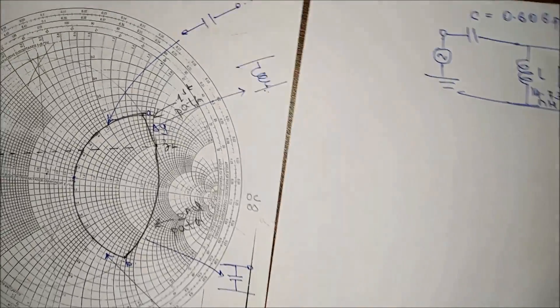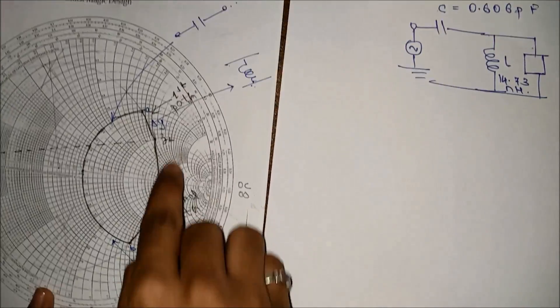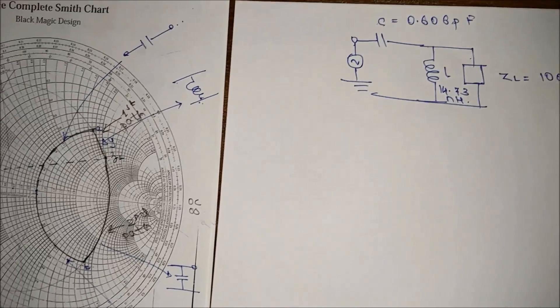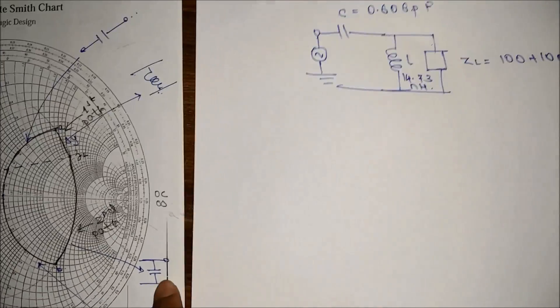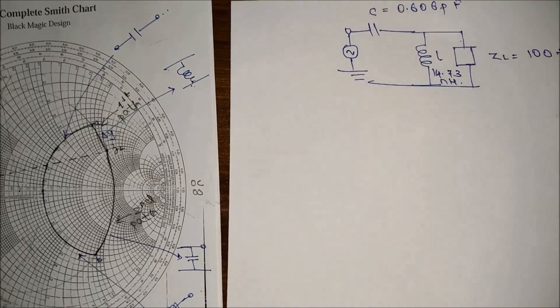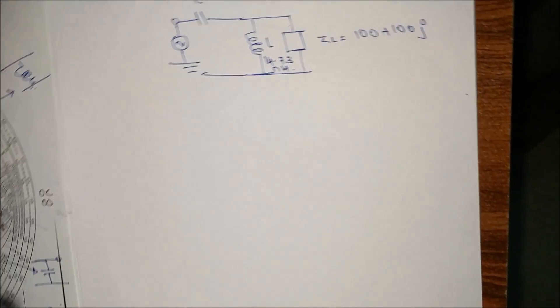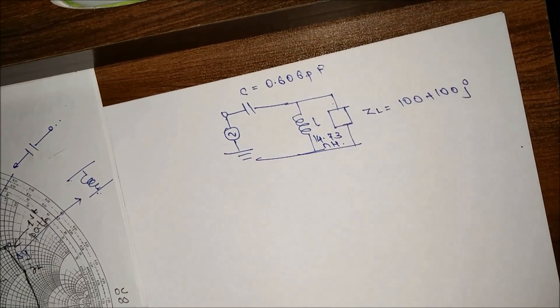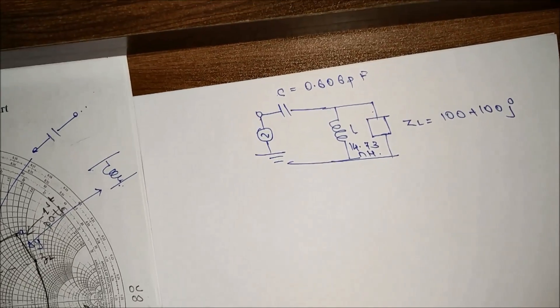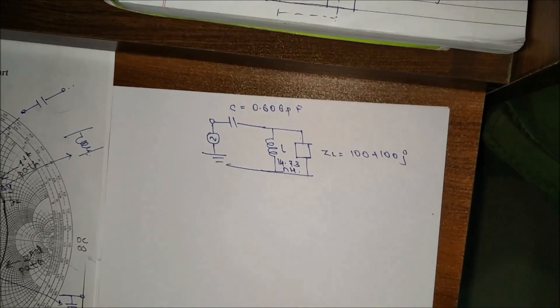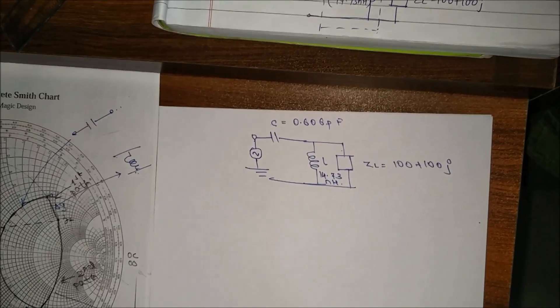This is method 1. Similarly, you can do method 2 using the downward path from ZL, which will give different values for C and L — both methods are correct. Hope you liked it. Don't forget to like, share the video with your friends, and subscribe to my channel. If you have any questions, comment below — I will be happy to assist you. Thank you.